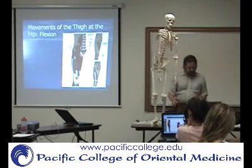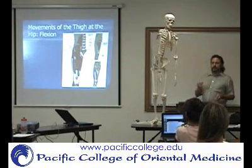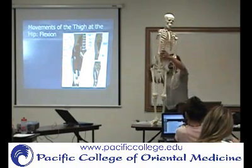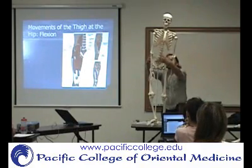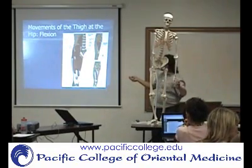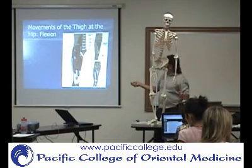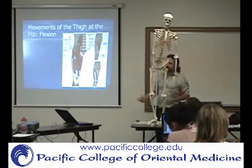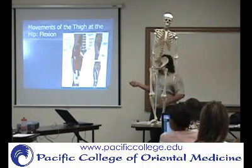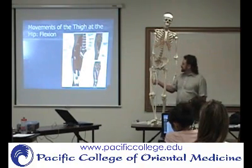Now we'll talk about hip flexors. You have the iliopsoas, which is actually a muscle made up of two muscles: you have the iliacus and the psoas. The psoas is going to be coming from the anterior part of the vertebrae. Both muscles go down into the lesser trochanter on the femur. Some of the muscles in the anterior compartment of the thigh are going to be weak hip flexors, but the primary is going to be the iliopsoas.